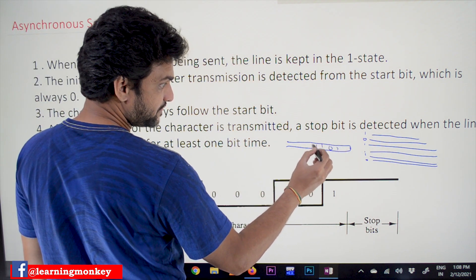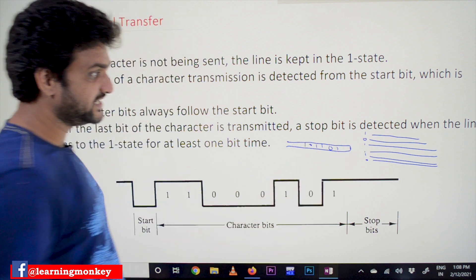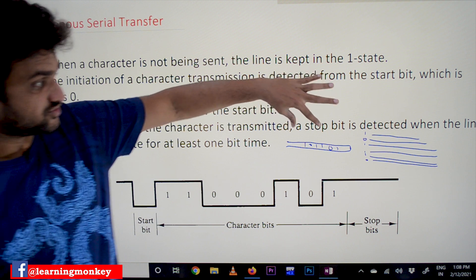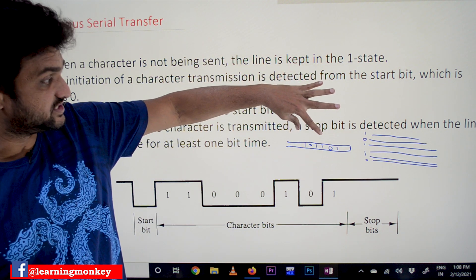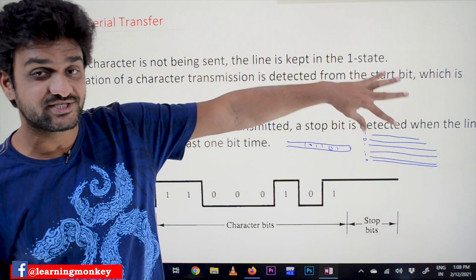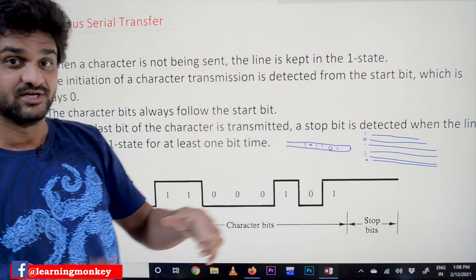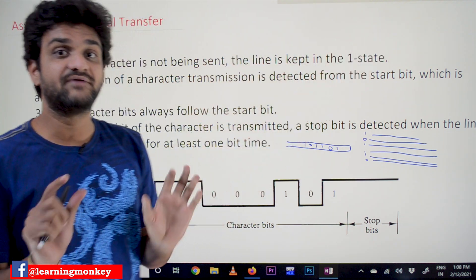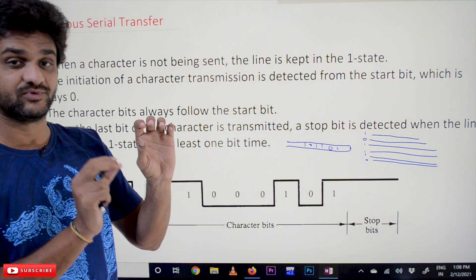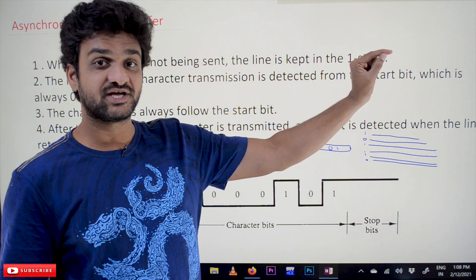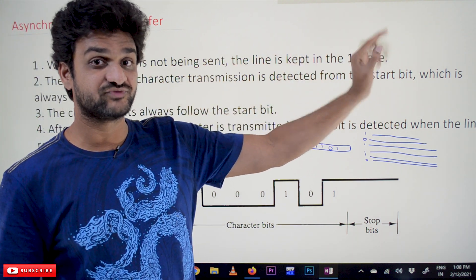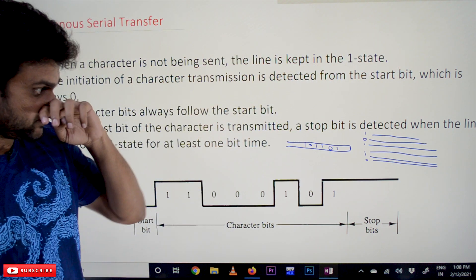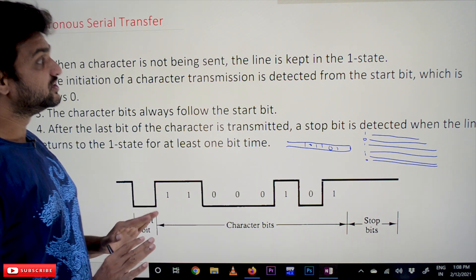In serial transfer, the bits get transferred one after the other through a single wire — this is what we call serial transfer. Here we are going to use the shift register in order to store this data onto the register. The concept of shift register has already been discussed in the digital logic design course; please watch that specific video in the DLD playlist.